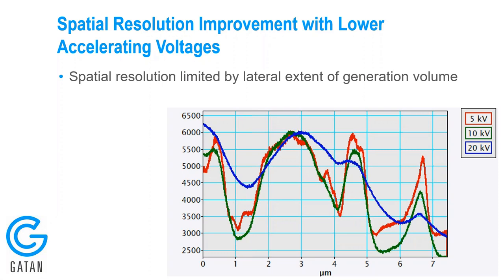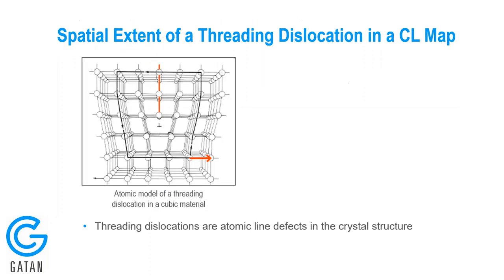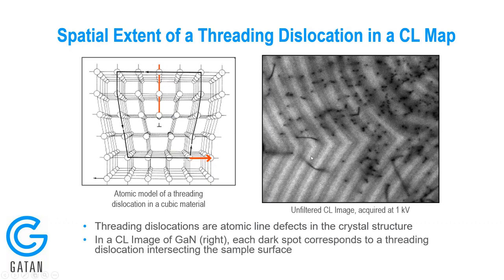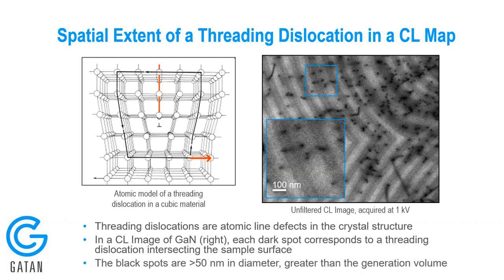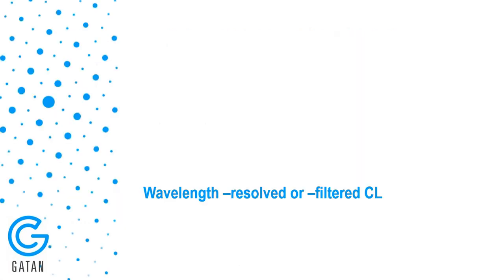That actually gives us an opportunity to determine the minority carrier diffusion length in a material. One method historically used for determining diffusion length in semiconductor materials is to look at the CL intensity drop-off as a function of distance from a threading dislocation — for example in a gallium nitride sample with several threading dislocations. However, it turns out one needs to look at spectroscopic information to properly determine this, so we move into wavelength-resolved or wavelength-filtered CL.